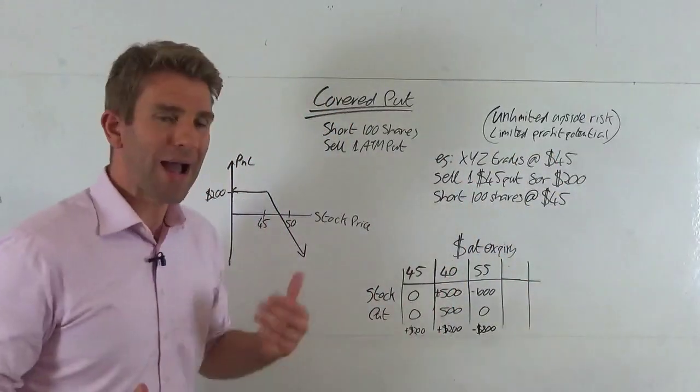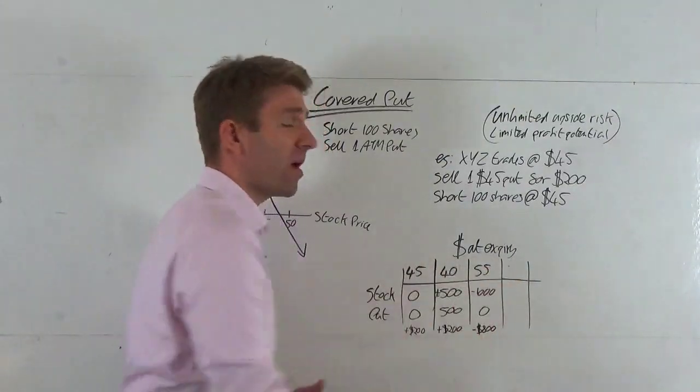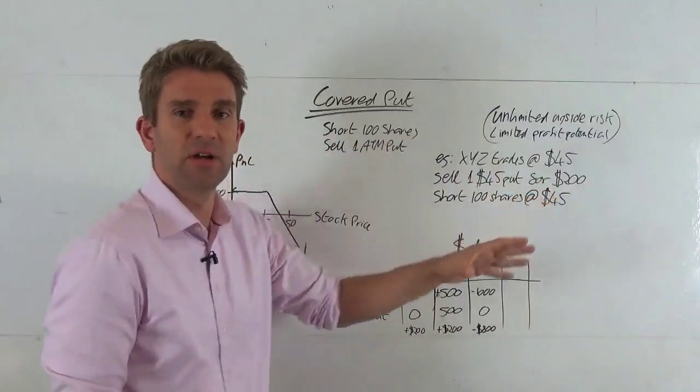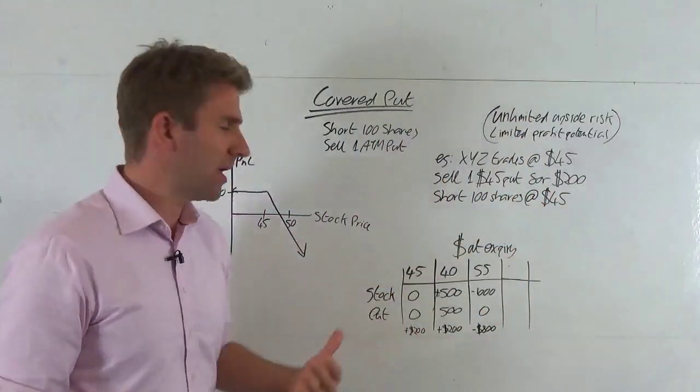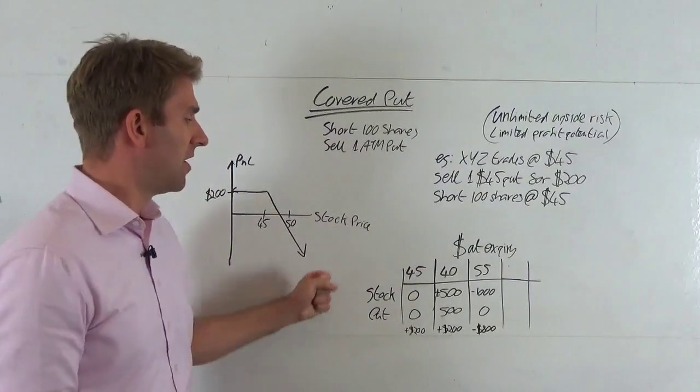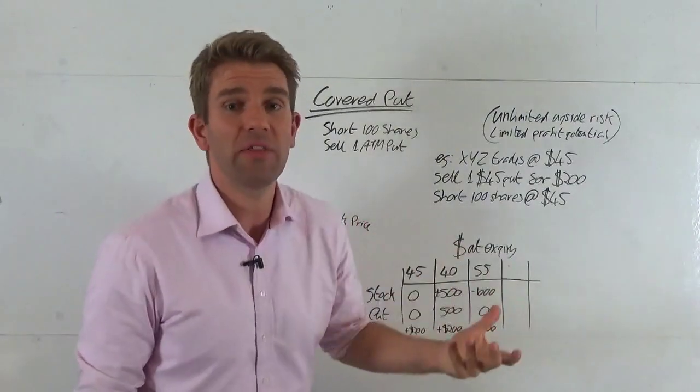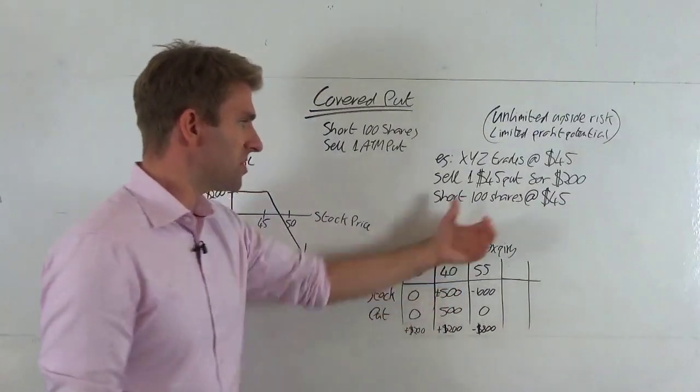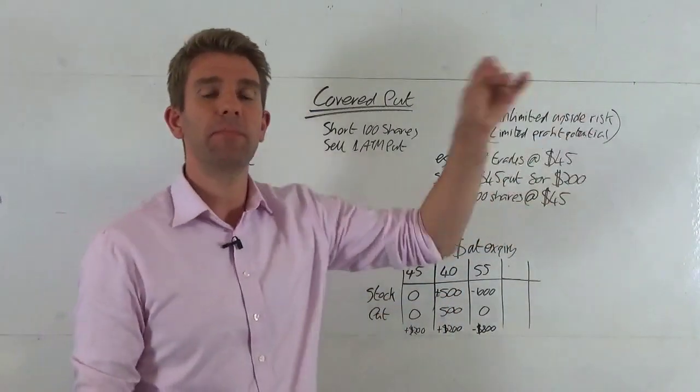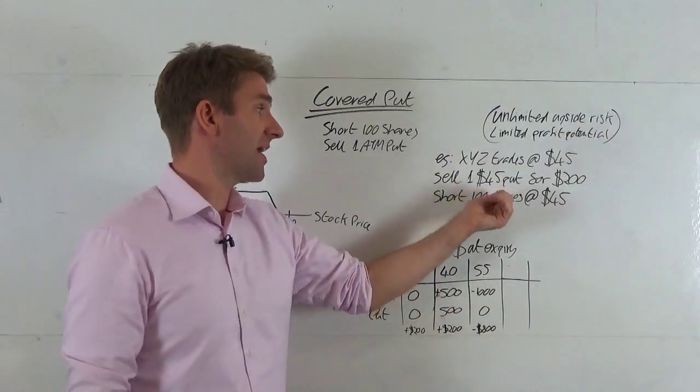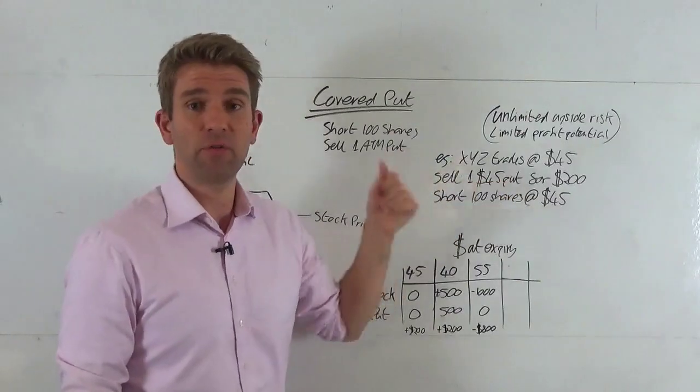What happens in different scenarios? At expiry, that could be any time that we decide, as long as this is all the same. Doesn't really matter, could be a week, could be three months, could be a year, whatever our thesis is. So let's have a look at the value of the stock if it goes to $45. $45 means it's done nothing, it just sat there. So the value of the short trade is zero. But what's the value of the put? Well, the put gives the buyer the right, but not the obligation, to sell something—in this case XYZ stock—at $45.